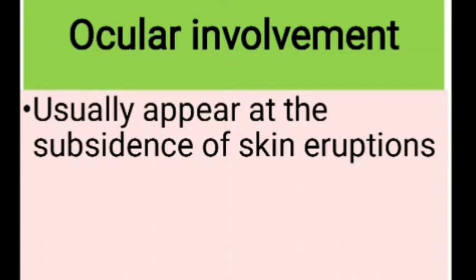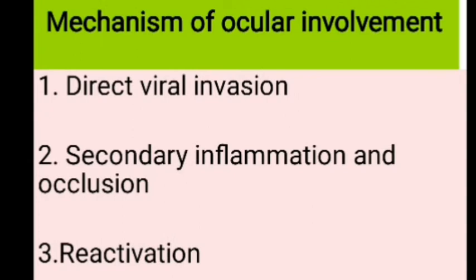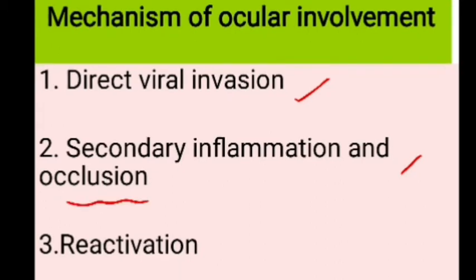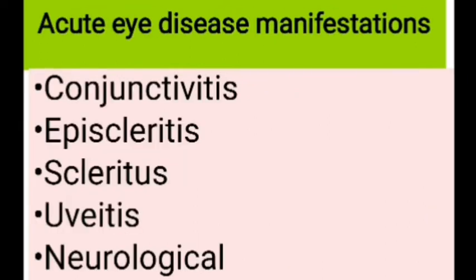Ocular lesions usually appear at the subsidence of skin eruption. The mechanism of ocular involvement can be: first, direct viral invasion leading to keratitis or conjunctivitis; second, secondary inflammation and occlusion of vessels causing vasculitis leading to episcleritis, scleritis, keratitis, and uveitis — this also leads to post-herpetic neuralgia via altered CNS signal processing; third, reactivation causing necrosis and inflammation in the sensory ganglia leading to corneal anesthesia and neurotrophic keratitis.